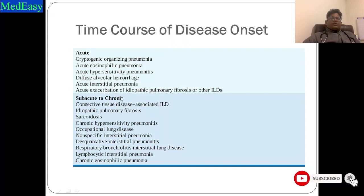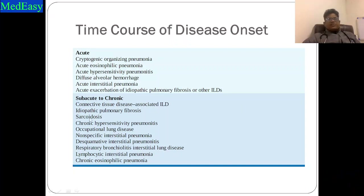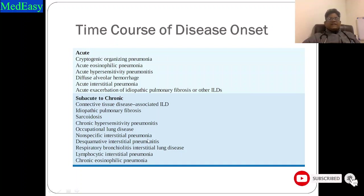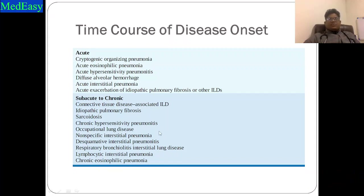Sub-acute to chronic presentations include connective tissue disease-associated ILD, idiopathic pulmonary fibrosis, sarcoidosis, chronic hypersensitivity pneumonitis, occupational lung disease, NSIP, DIP, respiratory bronchiolitis ILD, lymphocytic interstitial pneumonia, and chronic eosinophilic pneumonia.